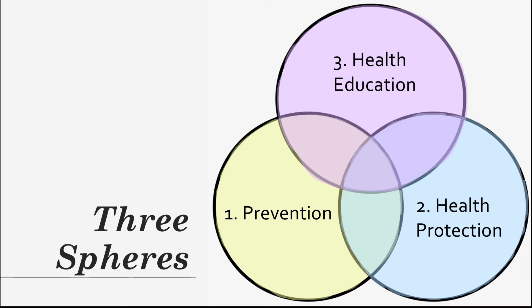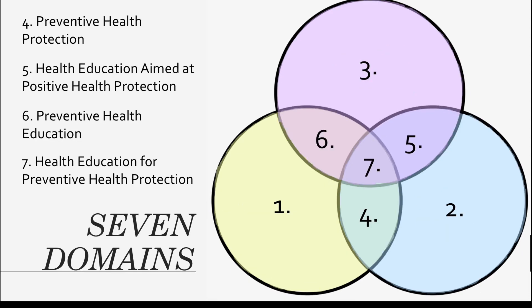There is more to the Tannehill model than just these three spheres. There are seven domains in total. The first three we just mentioned are prevention, health protection, and health education. The fourth domain is a combination of prevention and health protection, known as preventive health protection. Preventive health protection simply means the use of processes to avoid getting sick or contracting an illness. A common example is the fluoridation of public drinking water.